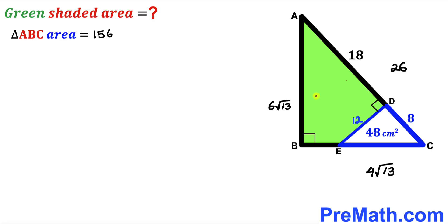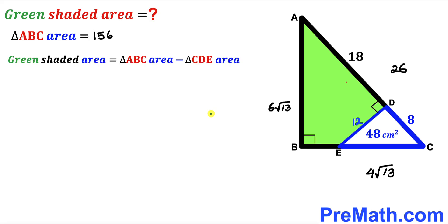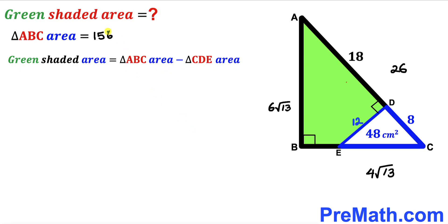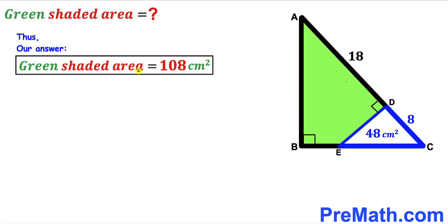Here is our final step. We calculate the area of the green shaded quadrilateral ABED. The area of the green shaded region equals the area of triangle ABC minus the area of the blue triangle CDE. Triangle ABC area is 156, and the blue triangle CDE area is 48. So 156 minus 48 gives us 108 centimeters square — that is the area of the green shaded region.